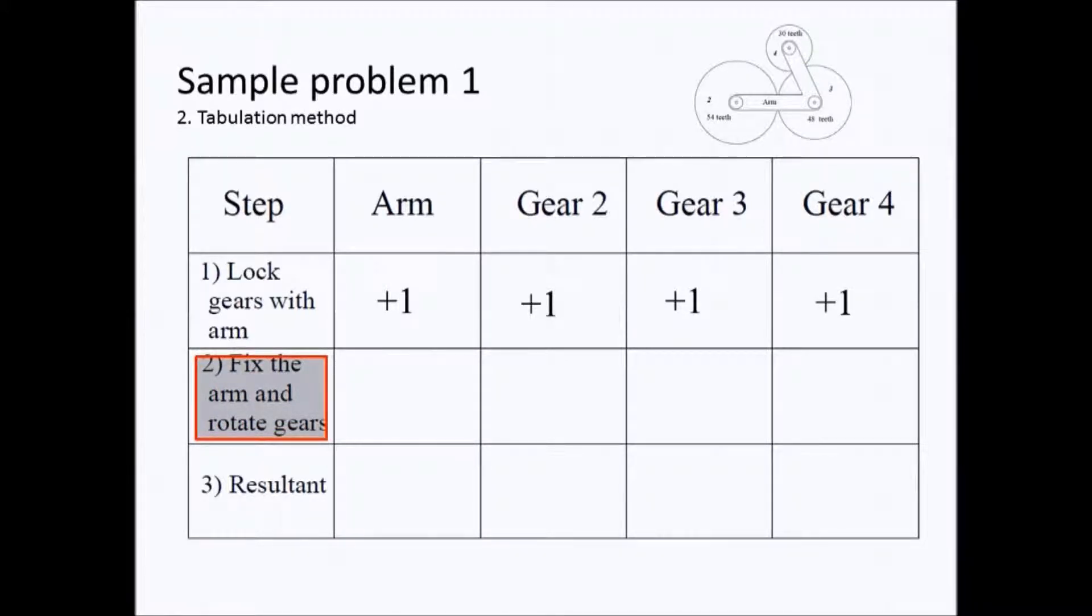With the fixed arm we can put zero in this box and the value two in the next box for gear two.